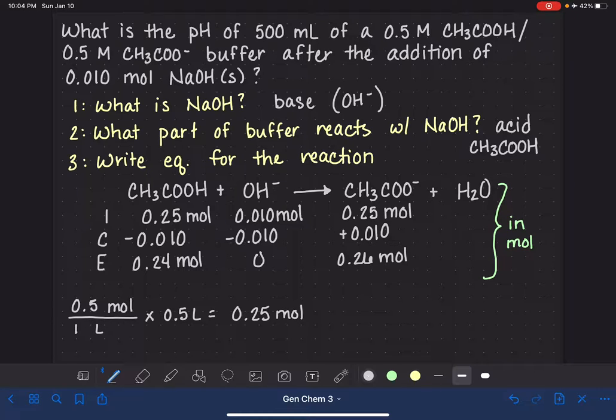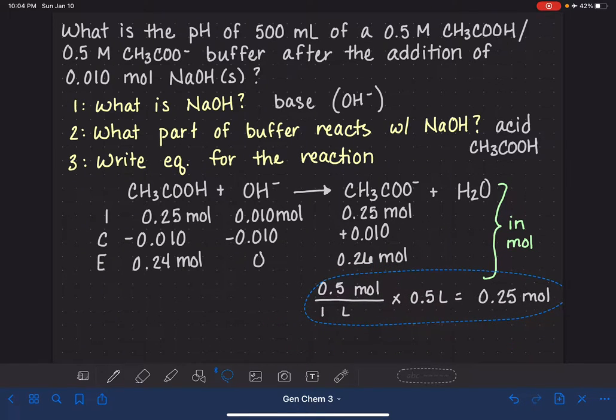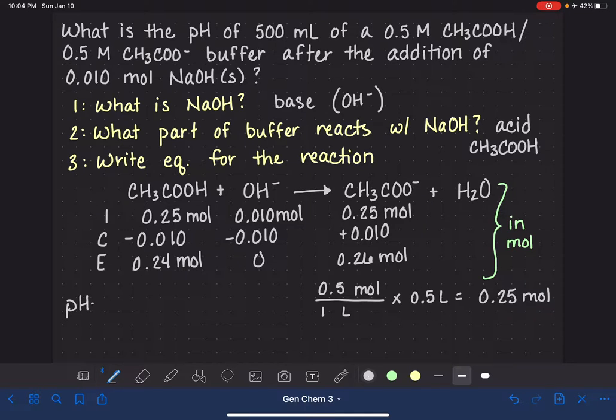Now let's not forget, our goal here is to calculate the pH of this buffer. And we can calculate the pH of the buffer using the Henderson-Hasselbalch equation. I'm just going to take this calculation right here and move it off to the side to make some room. The Henderson-Hasselbalch equation says that the pH is equal to the pKa plus the log of the concentration of the base over the concentration of the acid.